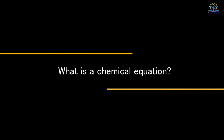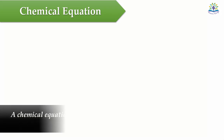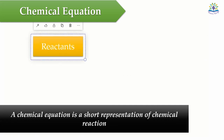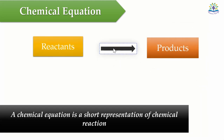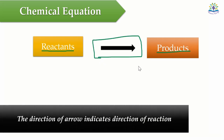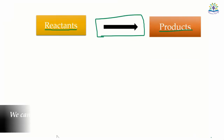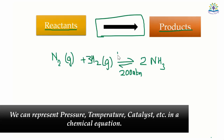Before we move on to that, let's see what is a chemical equation. A chemical equation is a short representation of a chemical reaction. It has reactants and products which are separated by an arrow symbol. We write reactants and products using their symbols or formulas. The direction of the arrow will help us to understand the direction in which the reaction proceeds. It also gives us information such as the temperature, pressure, catalyst present, etc.